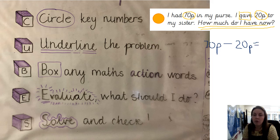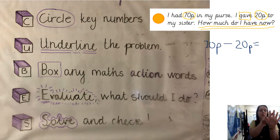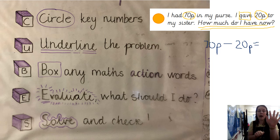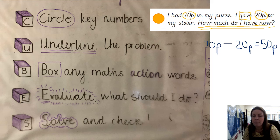Now I am going to find my answer. I can do that mentally or put up my seven fingers for 70. Taking away 20p, I now have 50p left. I am going to write out my answer — and I won't forget my symbols. There we go, solved problem.